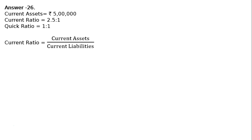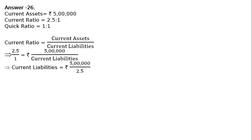Now, put everything into the current ratio formula. Current ratio = current assets upon current liabilities. So, 2.5 upon 1 = Rs. 5 lakhs upon current liabilities. Solving, current liabilities = 5 lakh upon 2.5, which gives Rs. 2 lakhs.